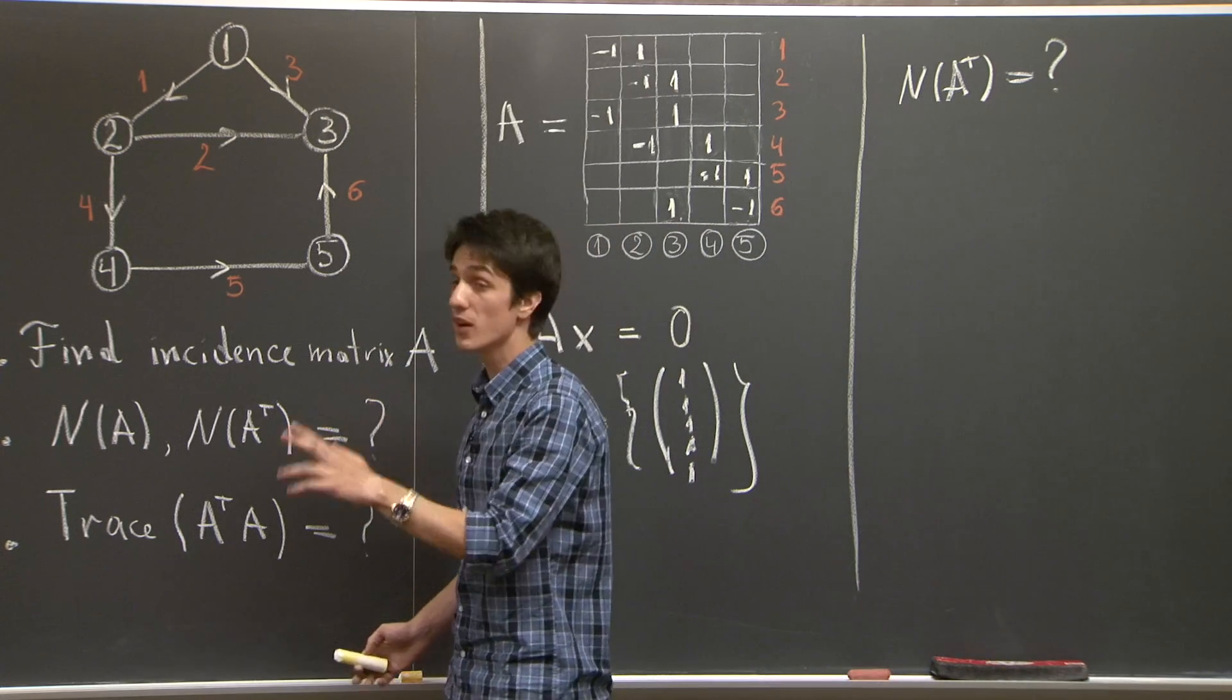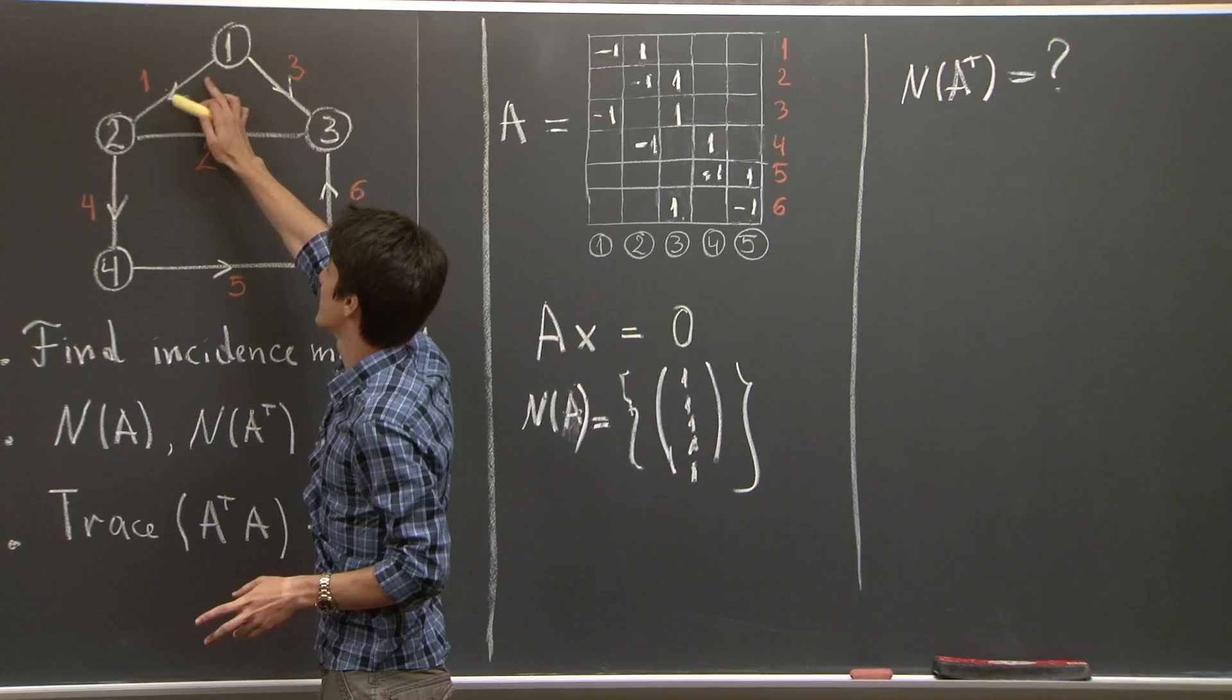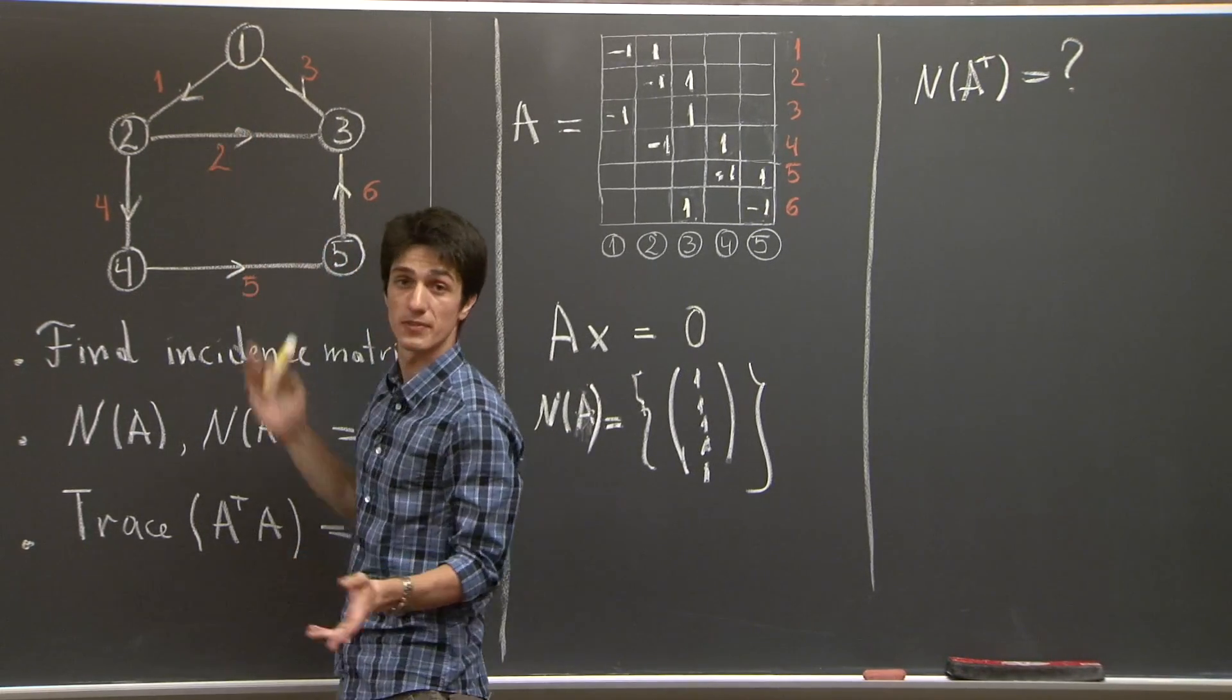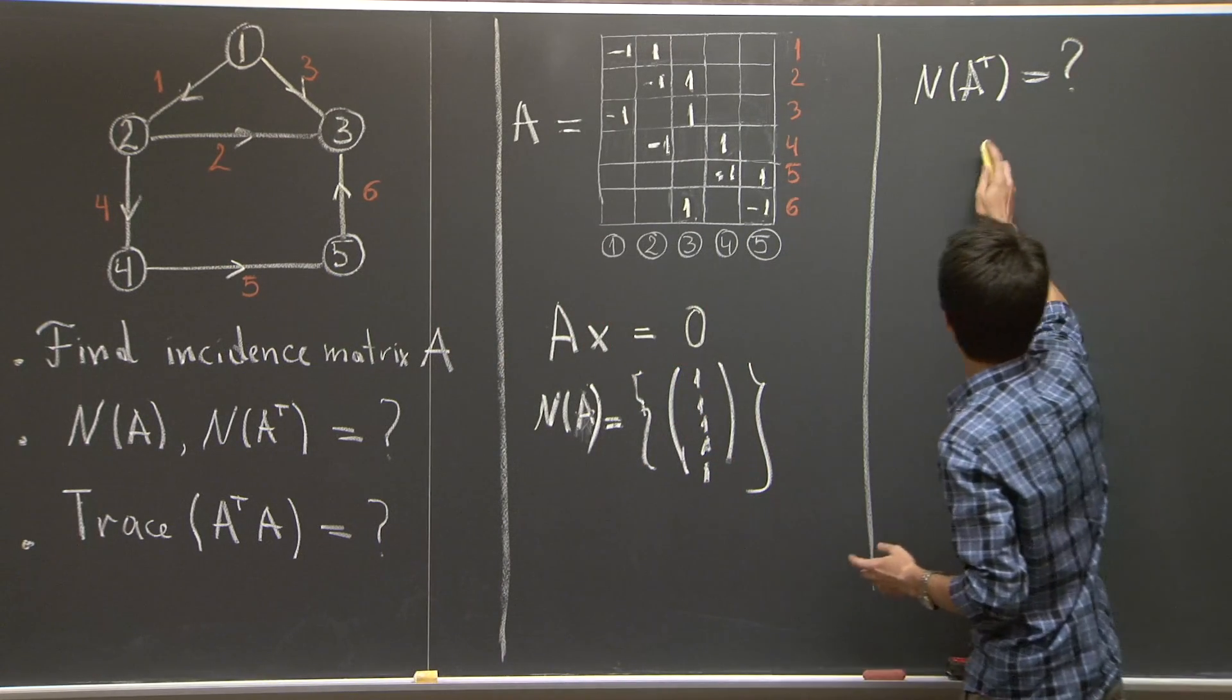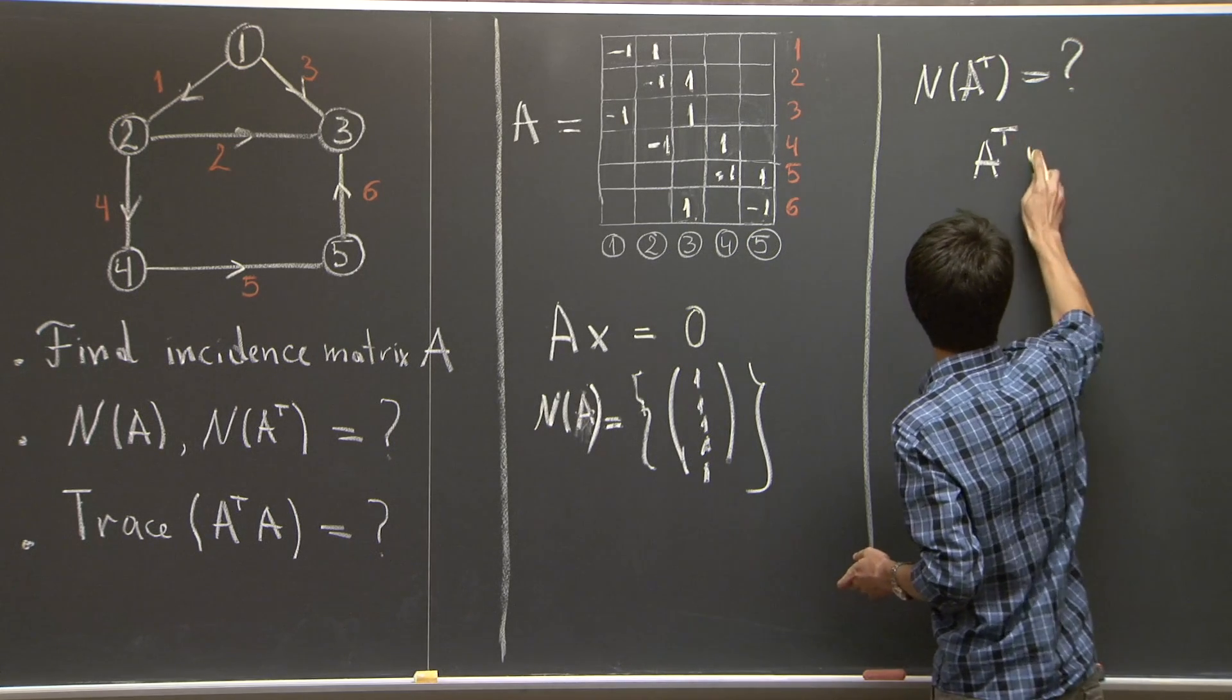and we're going to adopt the following convention for the currents. A current is going to be positive if it flows in the direction of the edge, and negative if it flows in the opposite direction. Right. So,